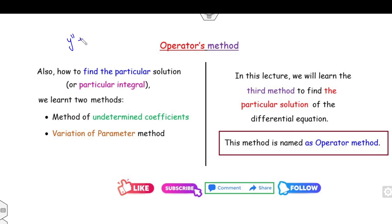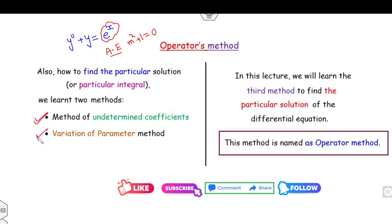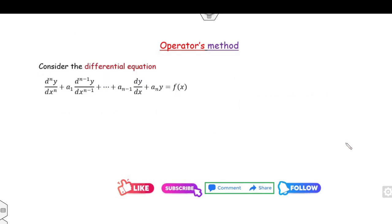For example, if you have the differential equation y double dash plus y equals e raised to power x, you can write the auxiliary equation as m squared plus 1 equals 0. The same problem can be solved with the help of the method of undetermined coefficients, or with the operator method. Believe me, this operator method is very very simple. I will tell you the generalized way to solve them.